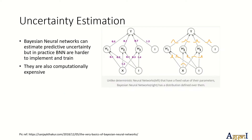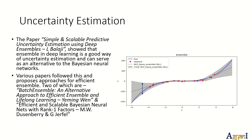Bayesian neural networks are quite efficient in capturing this kind of uncertainty, but in practice they are harder to implement, train, and are also very computationally expensive. So in 2017, Balaji came up with the paper 'Simple and Scalable Predictive Uncertainty Estimation Using Deep Ensembles,' showing that ensembling deep learning models is a good way of uncertainty estimation and can serve as an alternative to Bayesian neural networks. The idea is to take the mean of all ensemble members as your prediction and use the standard deviation among predictions to capture uncertainty.